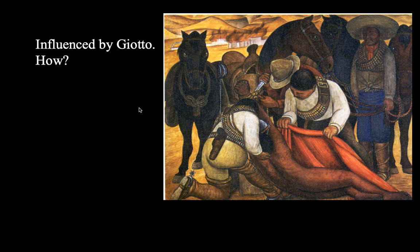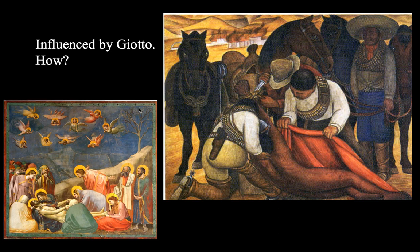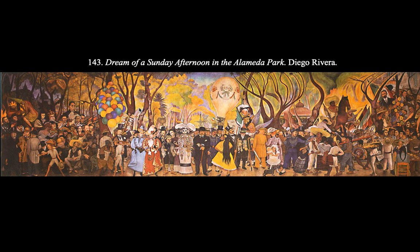He was very much influenced by Giotto — notice how this revolutionary who's been dragged from a horse naked was influenced compositionally by Giotto. That leads us to 'Dream of a Sunday Afternoon in Alameda Park.' He would have known Seurat's 'Sunday Afternoon on the Island of La Grande Jatte,' and he painted this on the inside of a hotel right off a major park in Mexico City, so a lot of the public could enter and see this grandiose mural.